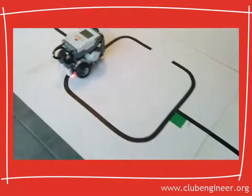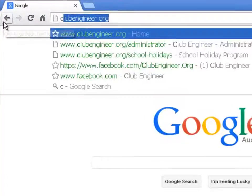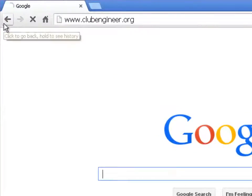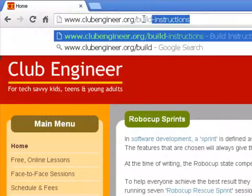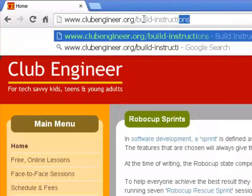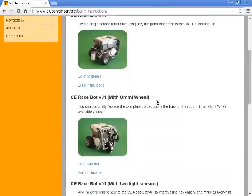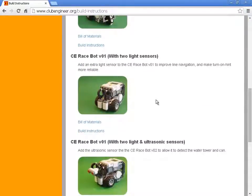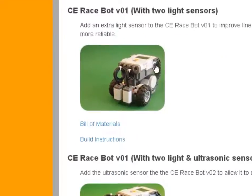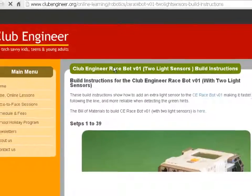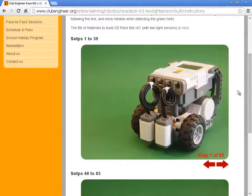To get some ideas how to modify your robot for two sensors, you can go to the Club Engineer website, clubengineer.org/build-instructions, and scroll down to the third robot on the page. See RaceBot version 01 with two light sensors. Click on that and we'll talk you through how to modify your robot for two sensors.